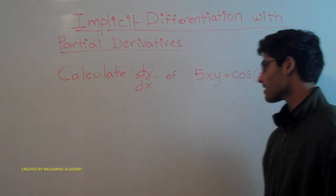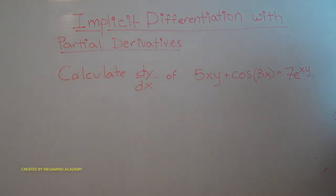Calculate dy/dx of 5xy plus cosine of 3x equals 7e to the xy power.